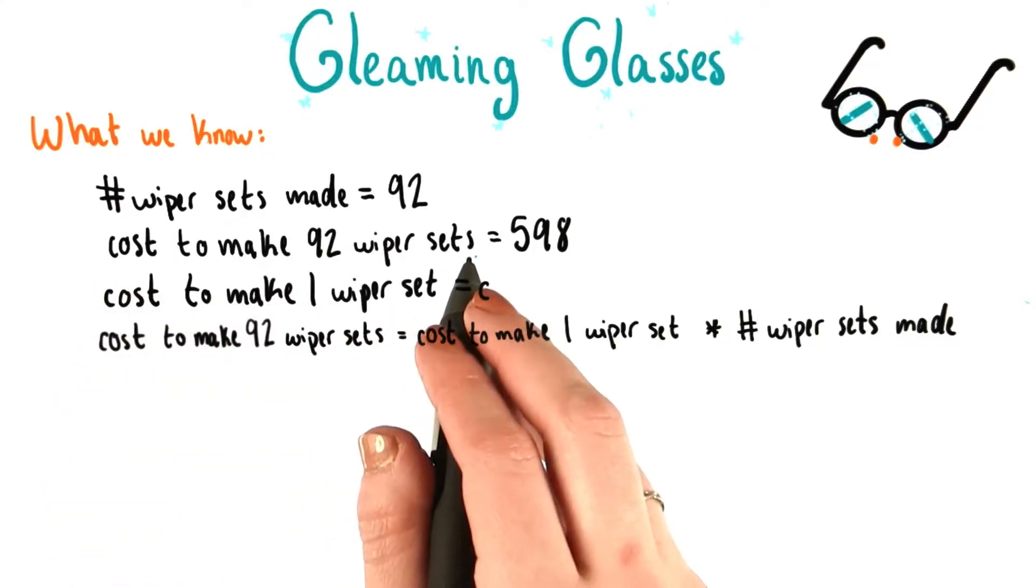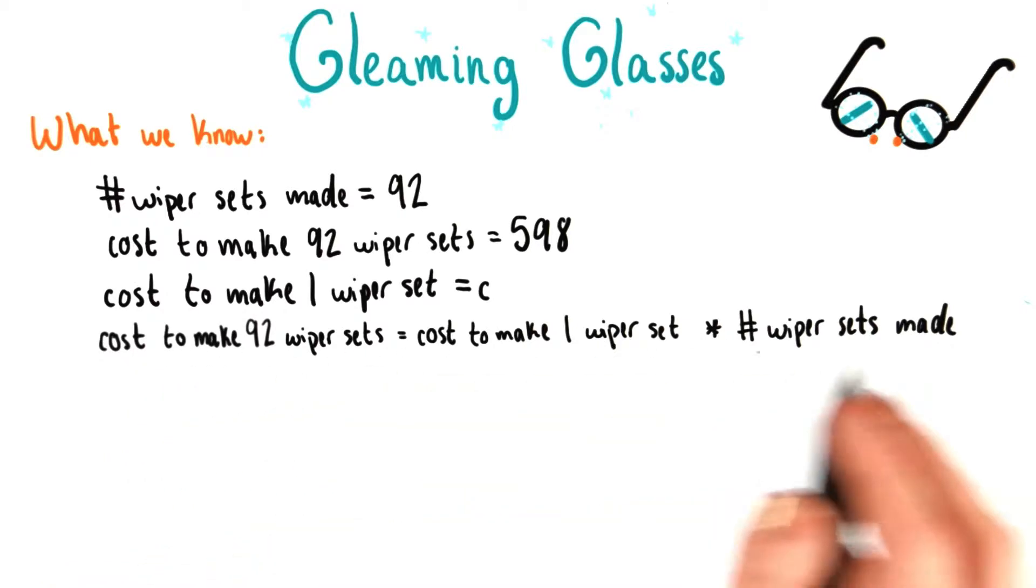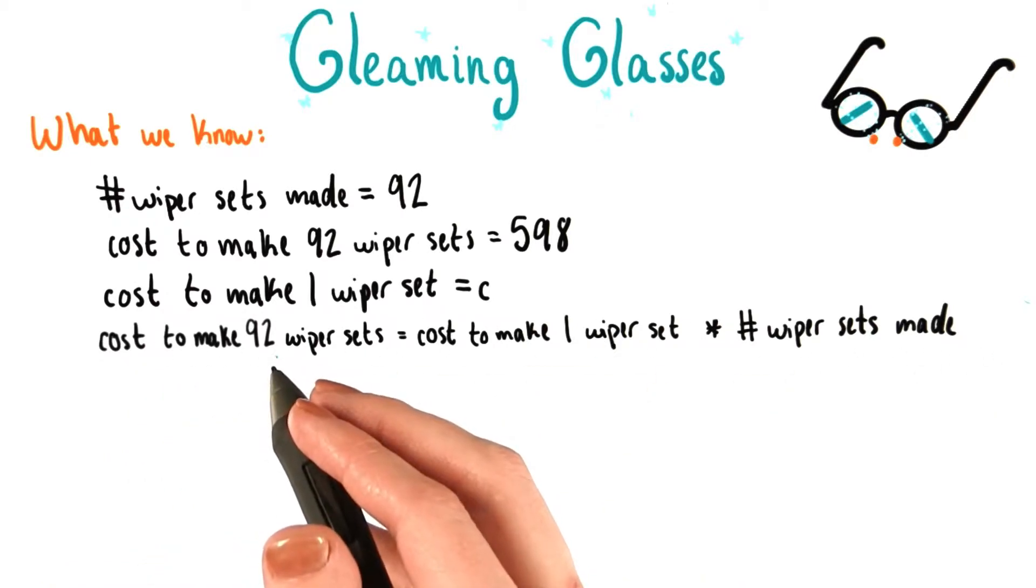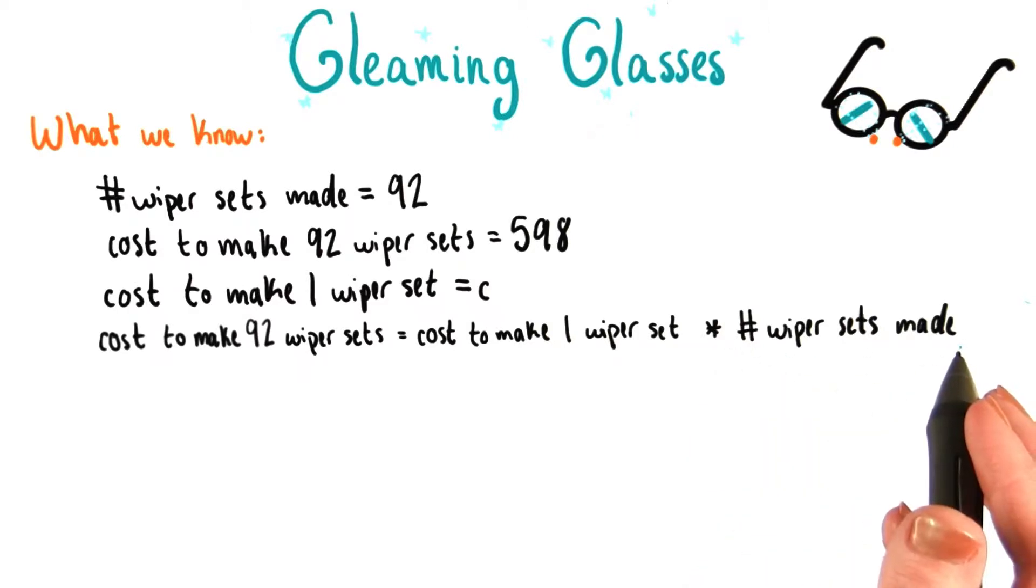You can see here that the cost to make 92 wiper sets is equal to 598. But we also see in the last equation that the cost to make 92 wiper sets is equal to the cost to make 1 wiper set times the number of wiper sets made.